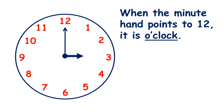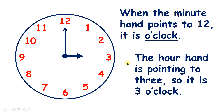When the minute hand points to 12, like it is here, it is o'clock. So if the hour hand is pointing to 3 and the minute hand tells us that it's o'clock, then it's 3 o'clock.